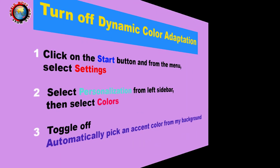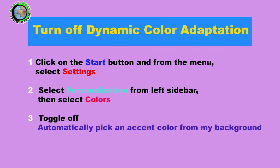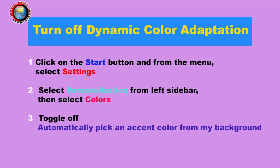Windows 10's dynamic color adaptation feature automatically picks the color from your desktop's wallpaper and adjusts the color scheme of the user interface accordingly. This feature increases resource usage and reduces performance of your Windows PC. That's why disabling this feature frees up resources and improves responsiveness.